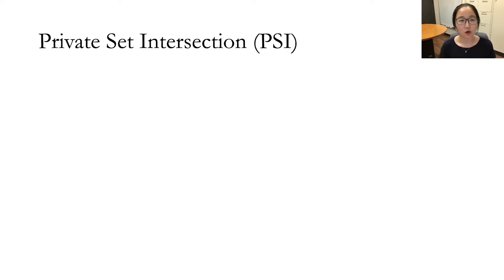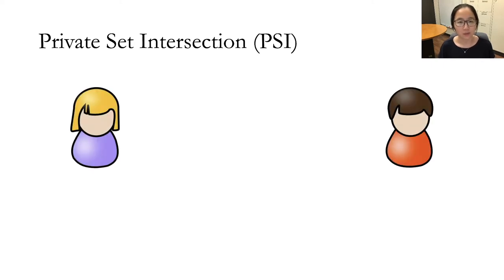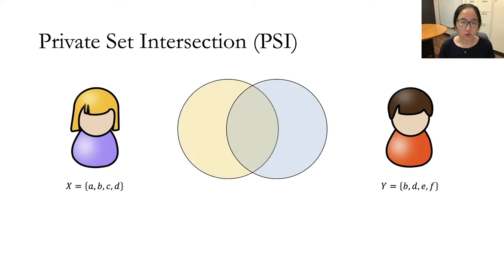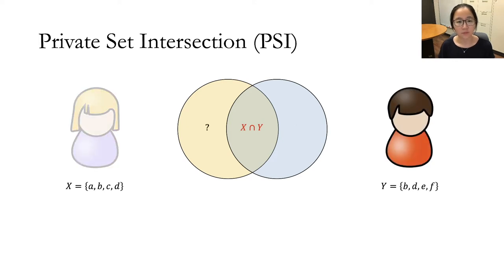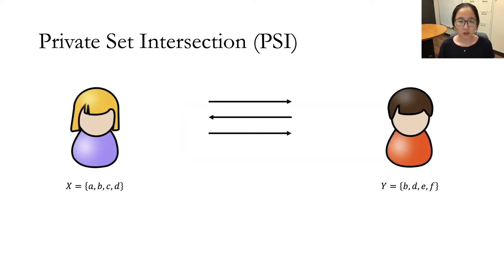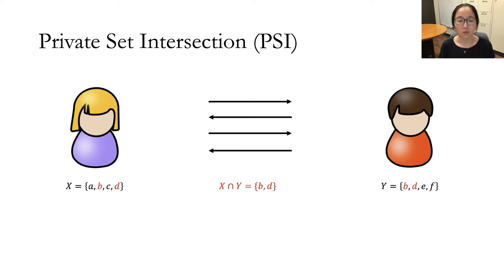We start with the problem of private set intersection, or PSI for short, where there are two parties, Alice and Bob, each of them has a private set X and Y, and they want to jointly compute the intersection of the two sets, but nothing more. They can run a secure two-party computation protocol, and by the end of the protocol, they can learn the intersection — in this case it has two elements, B and D — but nothing more.